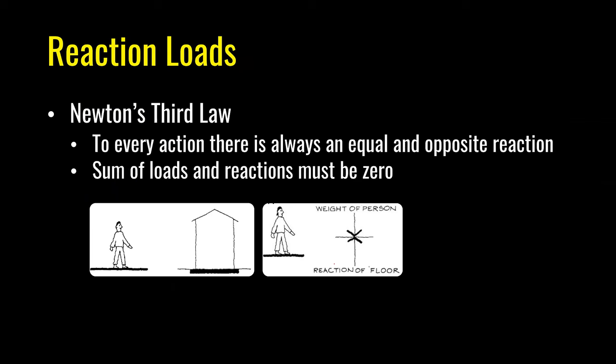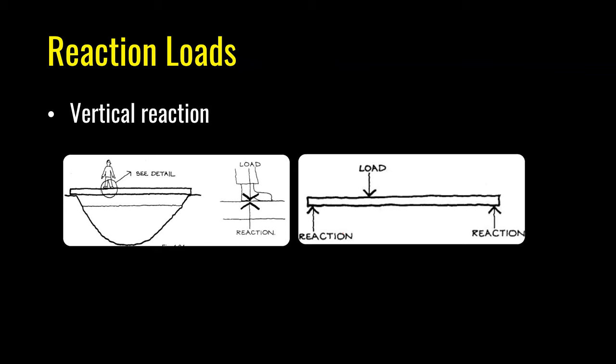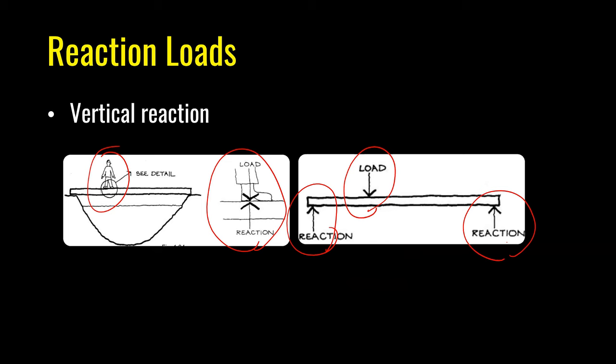Reaction loads are equal and opposite to applied forces, following Newton's third law: to every action there is an equal and opposite reaction. For example, a person standing on a floor results in an equal and opposite reaction from the floor. A person standing on a plank to cross a river exerts a vertical concentrated load; if that load is off-center, the reaction on the closer support will be greater than on the other side.